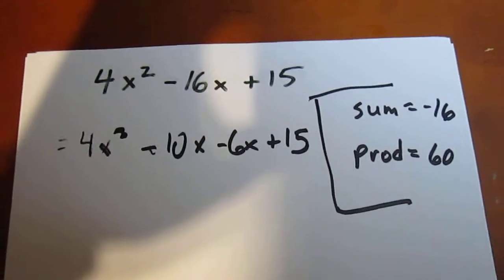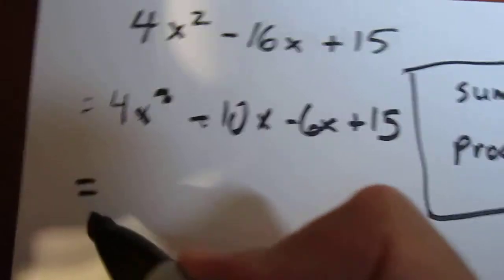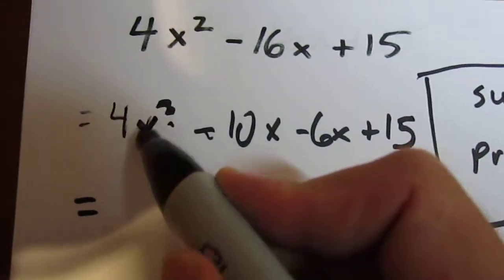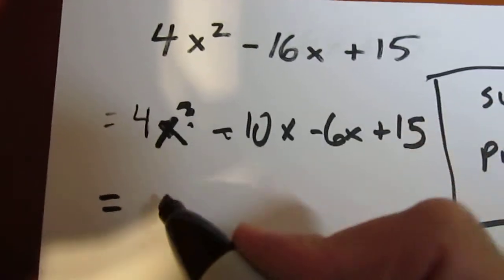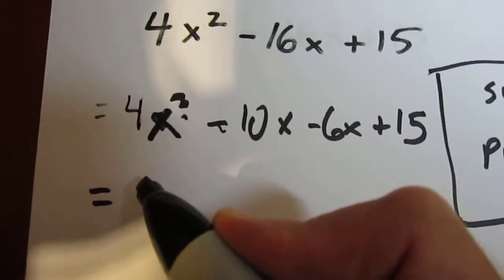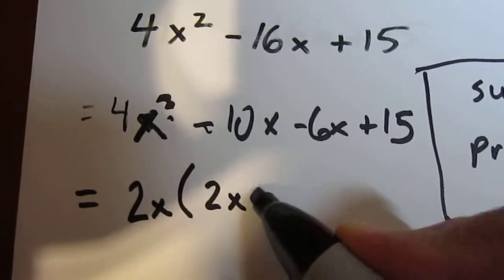And I show that rough work is off to the side. Now I'm going to try factoring out the first two terms. Sorry, there's an x there. Well, 4x squared minus 10x factors to 2x factors out, and we're left with 2x minus 5 in the bracket.